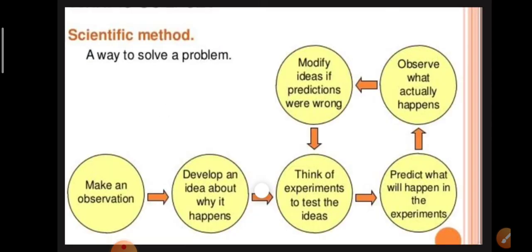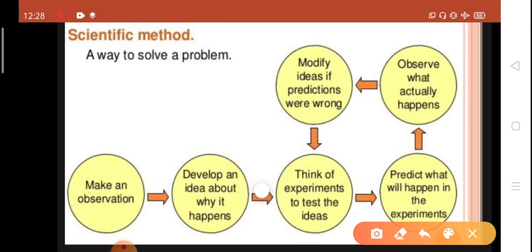Scientific method is a way to solve a problem. First, we make an observation. After observing it, we develop an idea about why it happens. And then we think of experiments to test the ideas.